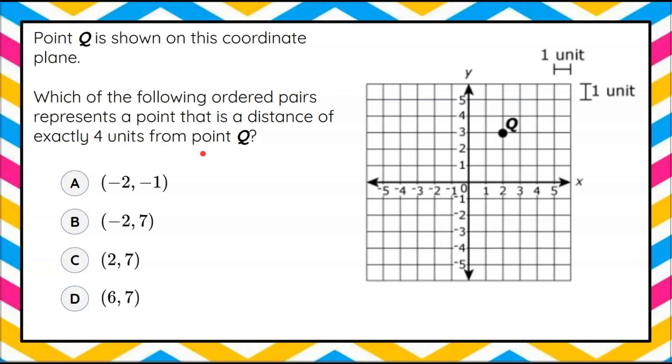Welcome back. So again, we want to determine which of these four ordered pairs is exactly four units from point Q. So I'm going to go over to point Q, and I'm going to start going a distance of four units. We can go in four different directions.